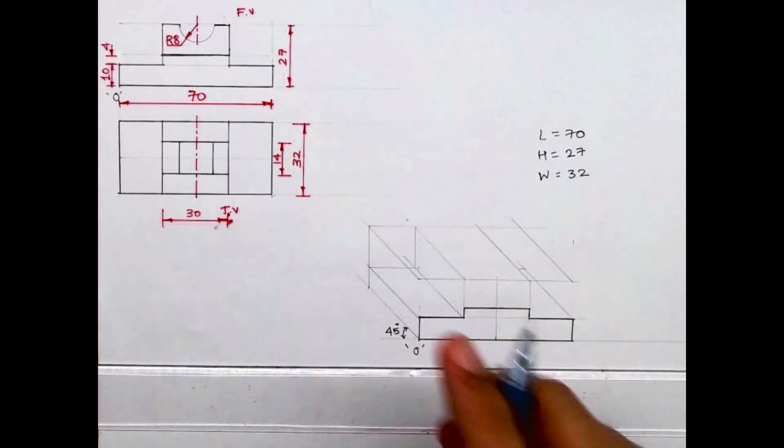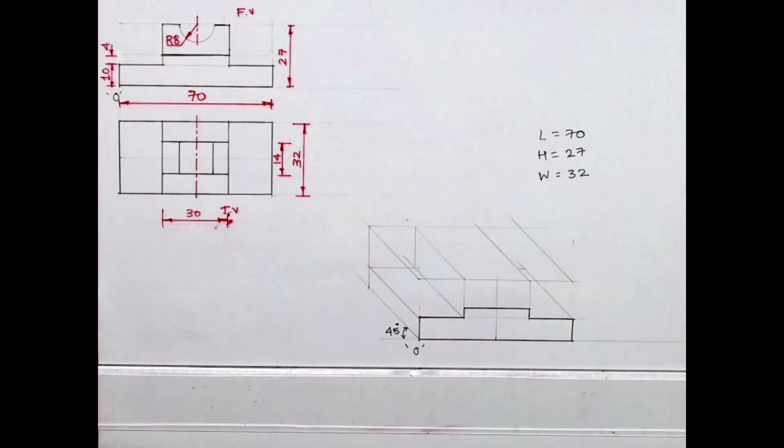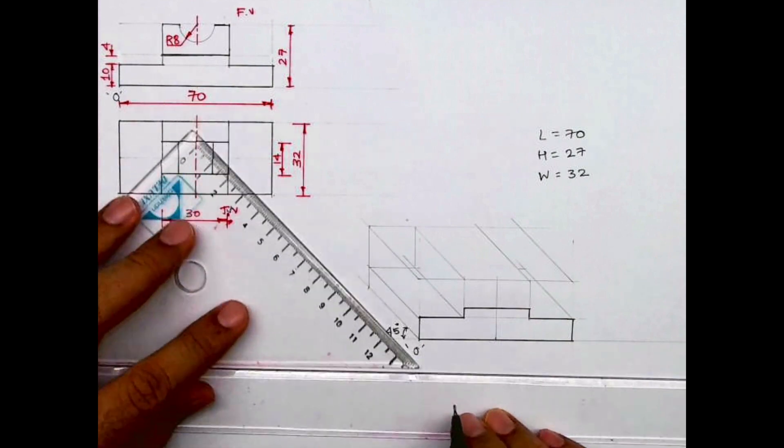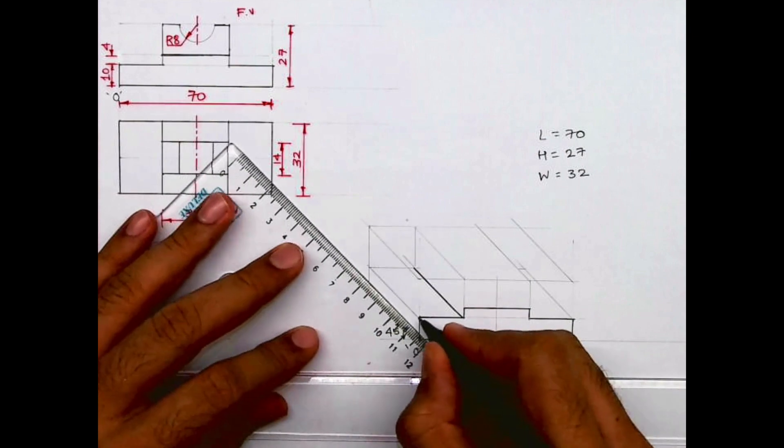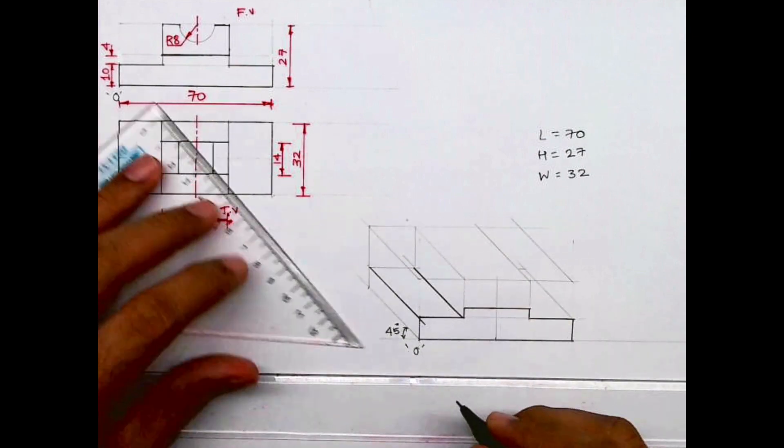Now if you see, this part two is behind, right? It is not in front. So what I will do, whatever is the dark part, see this part one. This is dark, so that much we can draw.